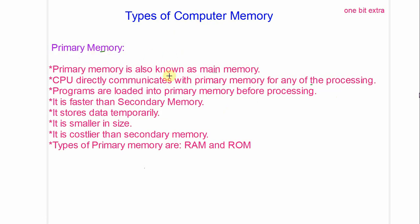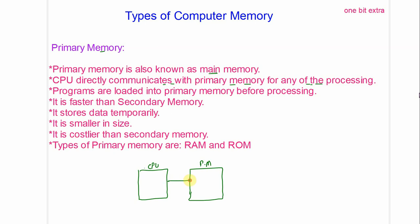Primary memory is also known as main memory. The CPU directly communicates with primary memory for any processing. Programs are loaded into primary memory before processing.